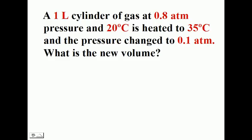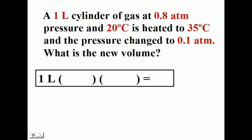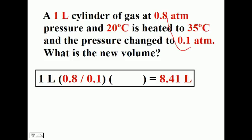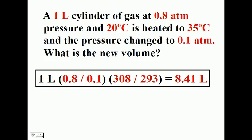Let's look at another problem. We have a 1-liter cylinder that undergoes a pressure change and a temperature change. Our pressure went from 0.8 to 0.1 atm — pressure went down — which means our volume is going to expand and go up. Looking at our temperatures once converted to Kelvin, our temperature did increase, so we would expect volume to likewise increase, setting up ratios greater than 1. Our final volume did indeed increase. In this example, temperature had a much greater effect on the increase than pressure did on the decrease of the final volume.